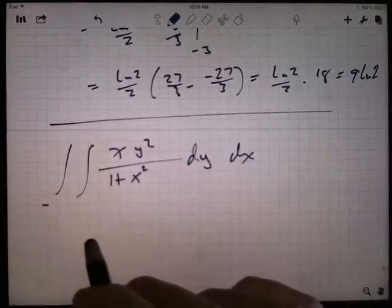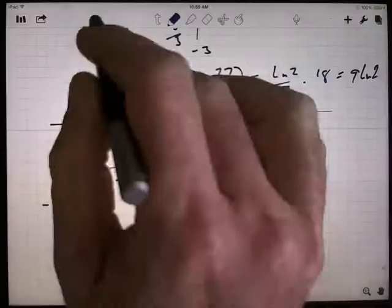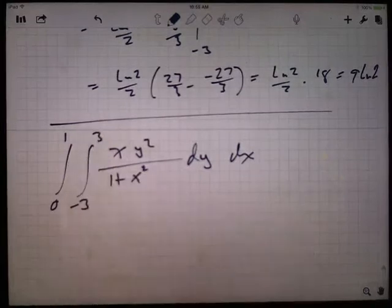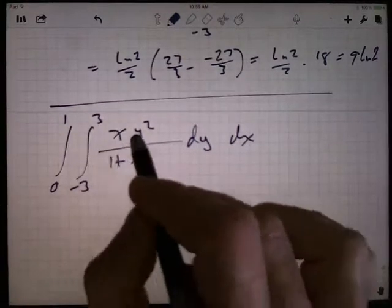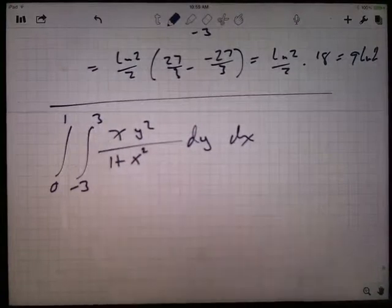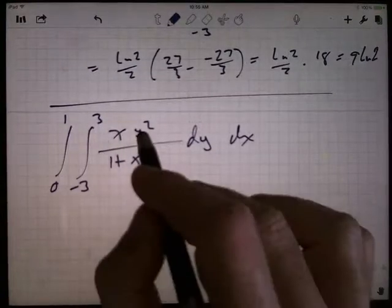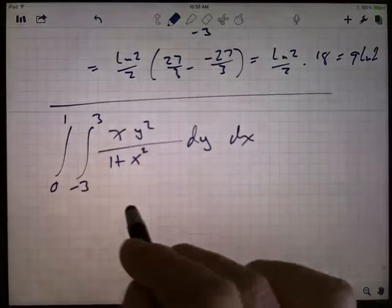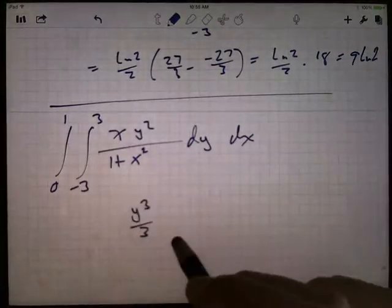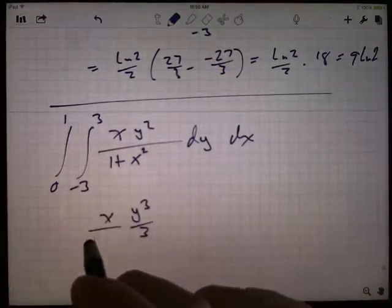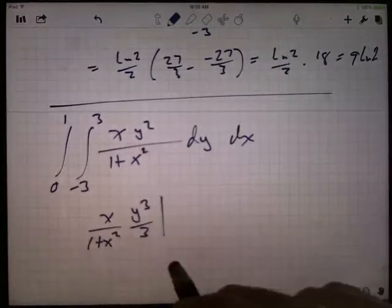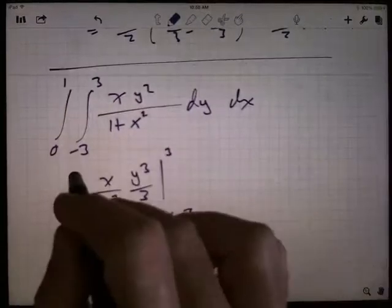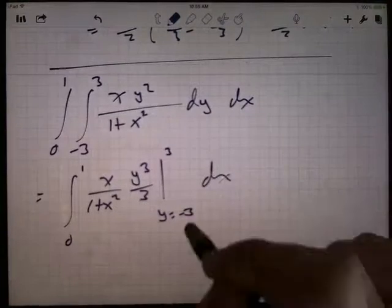This is from, okay, so the X is on the outside, so the X is from 0 to 1, the Y is on the inside, this is minus 3 to 3, okay? Now, all this stuff with X's is just a constant, so really it's just the Y squared that you're going to integrate to Y cubed over 3, right? The X over 1 plus X squared is still there. You're evaluating this between Y equals negative 3 and 3, and then when you're done, you're going to integrate from 0 to 1 DX, right?